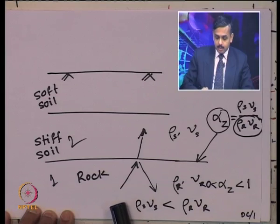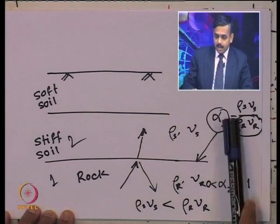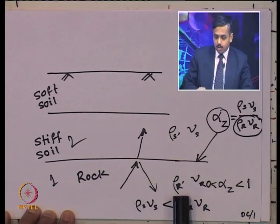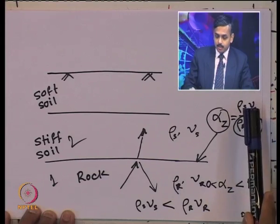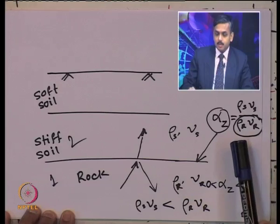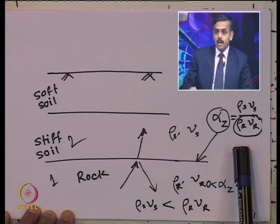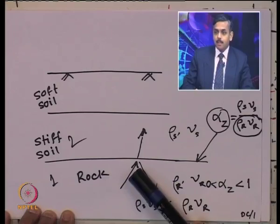When seismic waves are travelling from the bottom most layer to the top most layer, the specific impedance ratio between two layers — suppose the rock layer and the soil layer — is given by the specific impedance of the soil layer divided by the specific impedance of the rock layer. The denominator is the specific impedance of the layer from which the incident wave is coming.